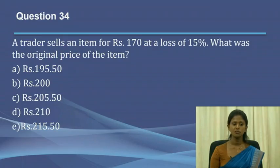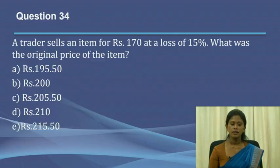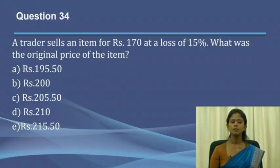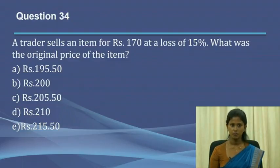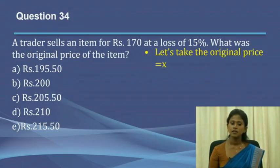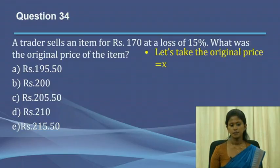Question 34: A trader sells an item for 170 rupees at a loss of 15%. What was the original price of the item? According to this question, after the loss he sells the item at 170 rupees, and we need to find the initial price before the loss. We take the original price as an arbitrary variable X.